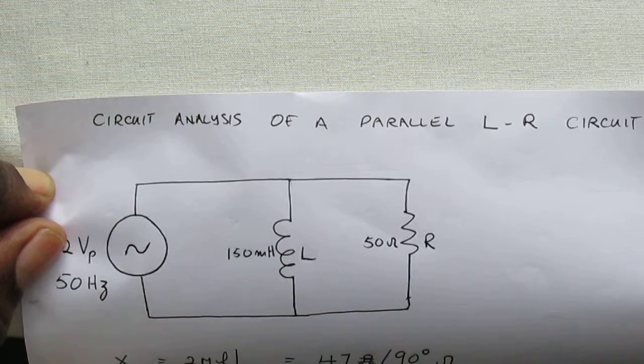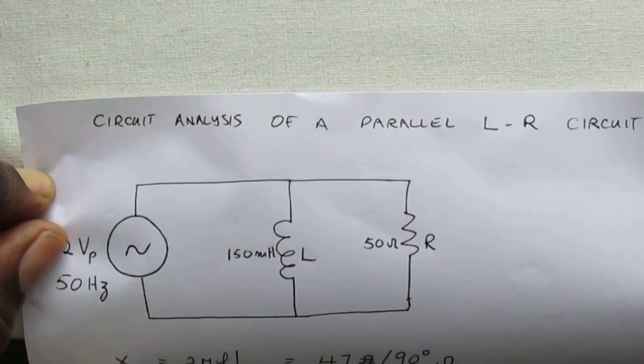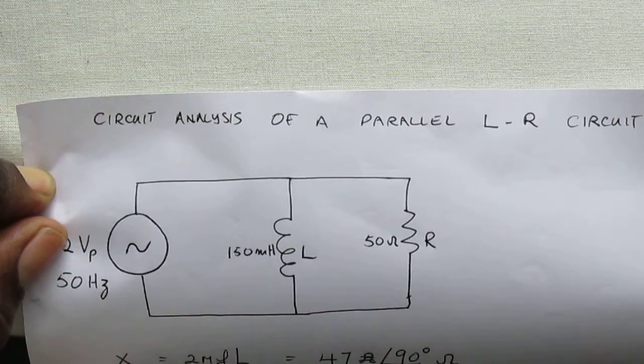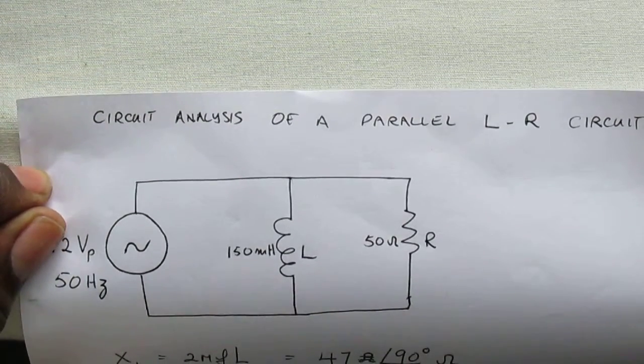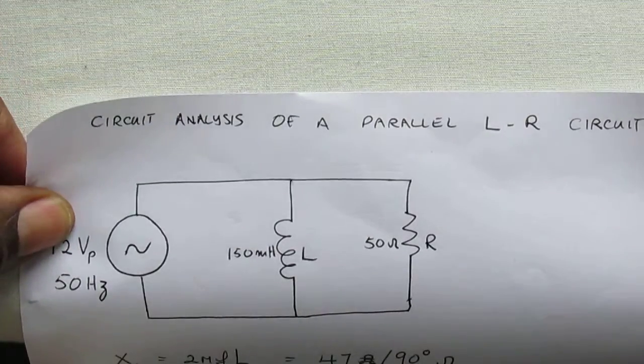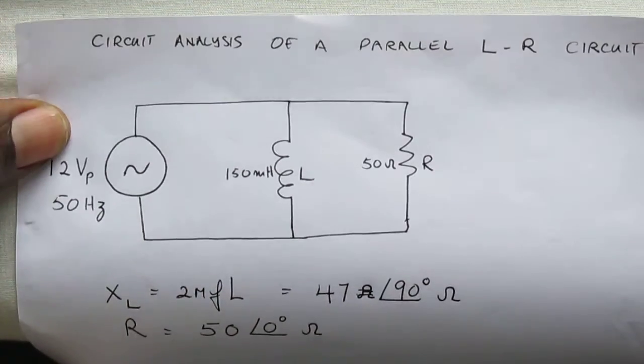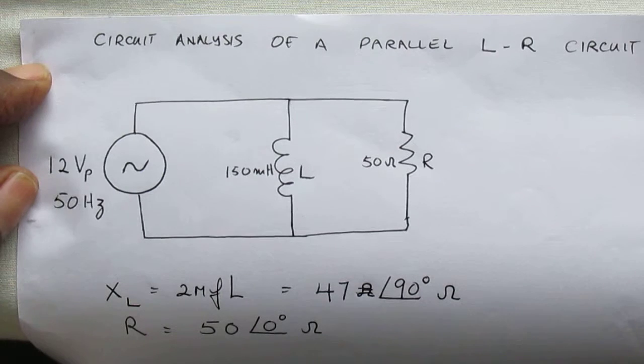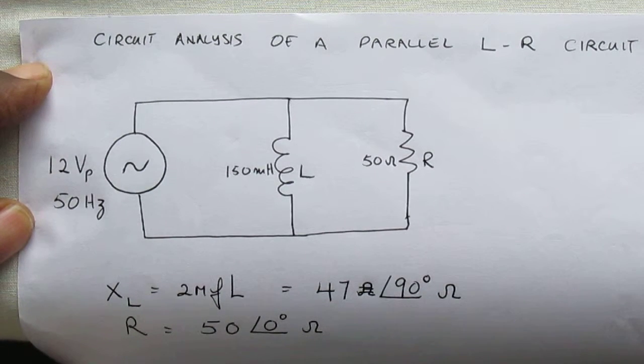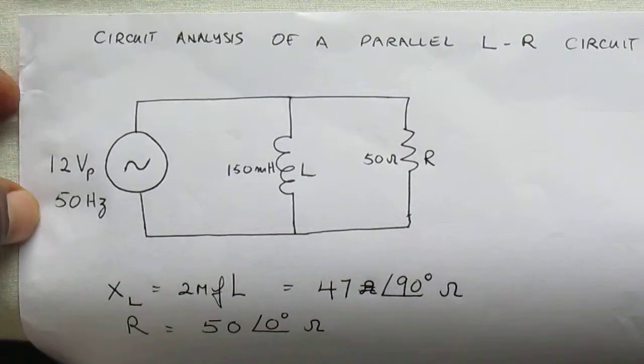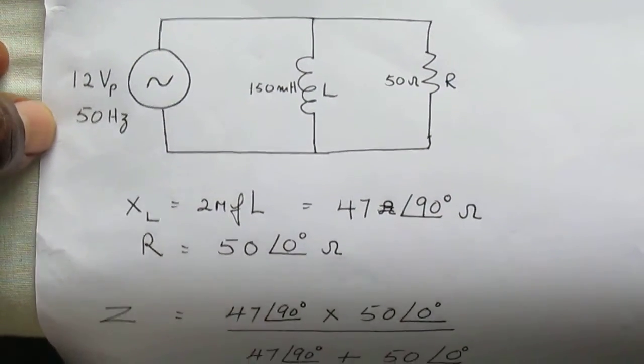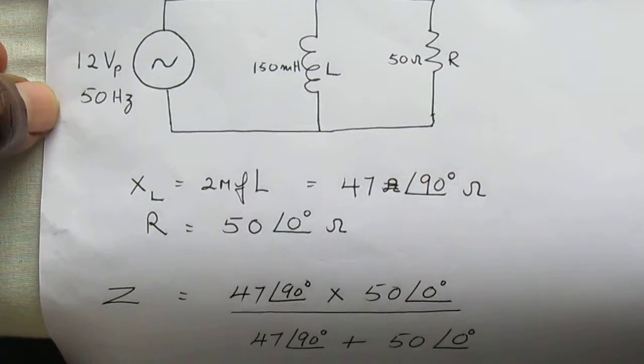The first step is to calculate the inductive reactance of the coil using the formula XL equal to 2πFL. This results in a value of 47 angle 90 degrees ohms. Now R is 50 ohms.